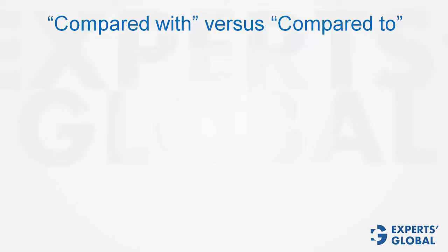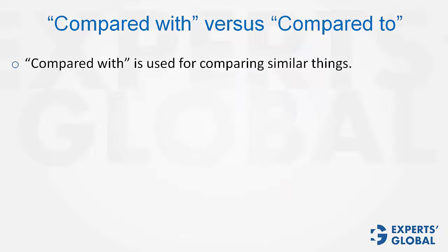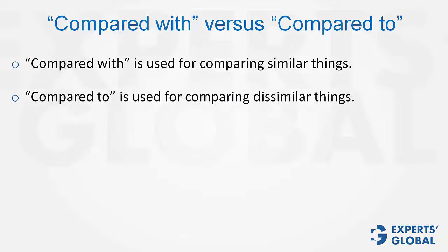COMPARED WITH vs. COMPARED TO on the GMAT. COMPARED WITH is used for comparing similar things, and COMPARED TO is used for comparing non-similar things.